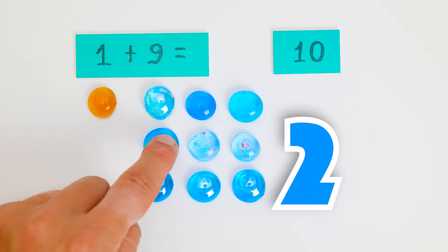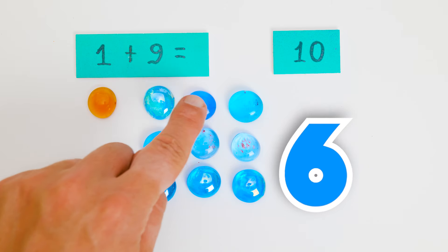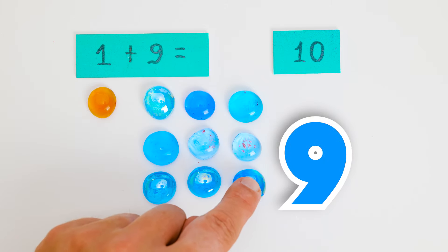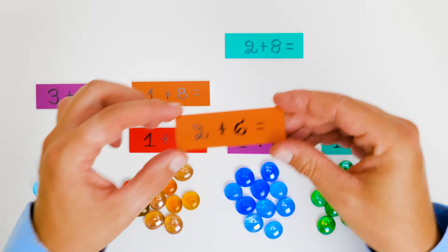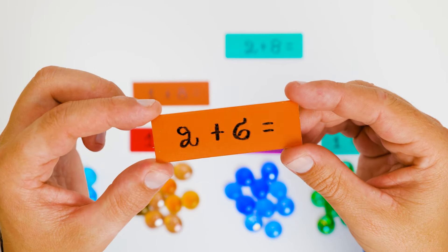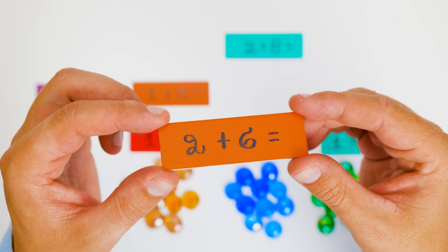One, two, three, four, five, six, seven, eight, nine, ten. We have ten gems. Math isn't so hard after all. I think we're ready for another one. This one is two plus six. Let's do it together. Yay!